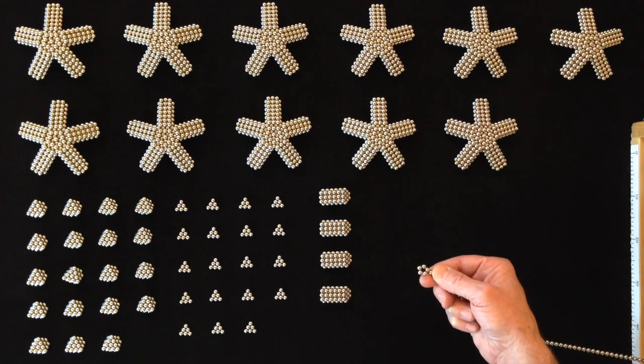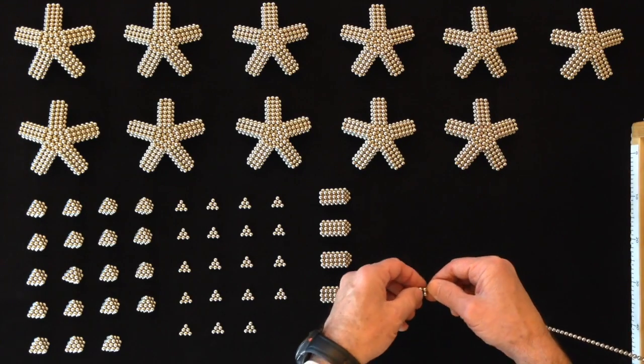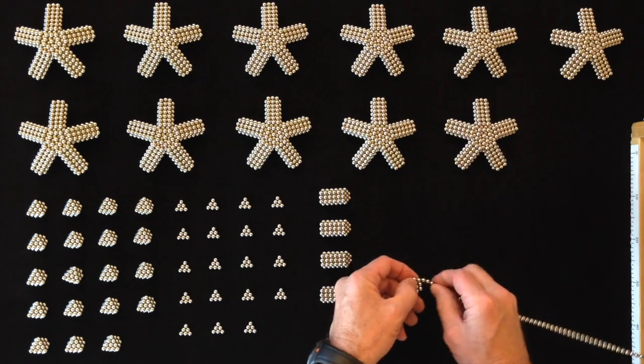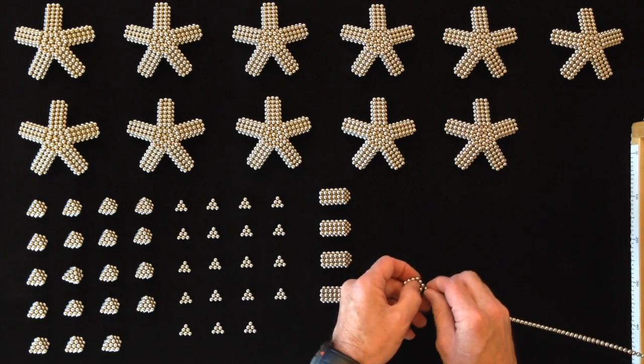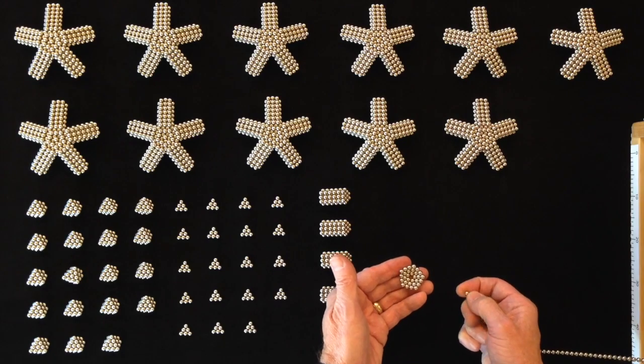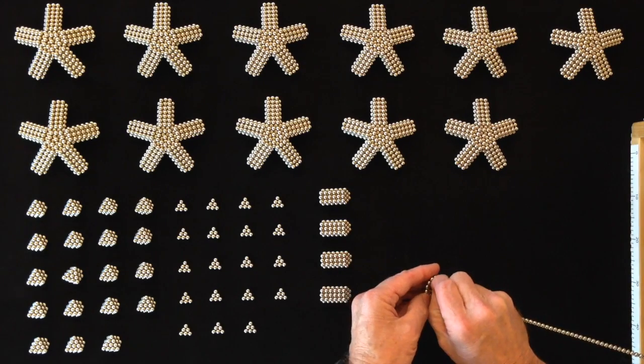To build it, start with a pentagon ring, add two layers to it like that, add a magnet to the center.